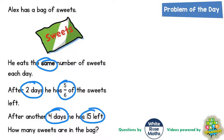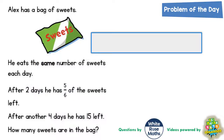Well, the easiest thing to do here is to do a bar model, then we'll go through the clues again one at a time. We're dealing with sixths, so our bar needs to be split into six pieces. Split it in half first, and then each half split into three, and that will give us six pieces.